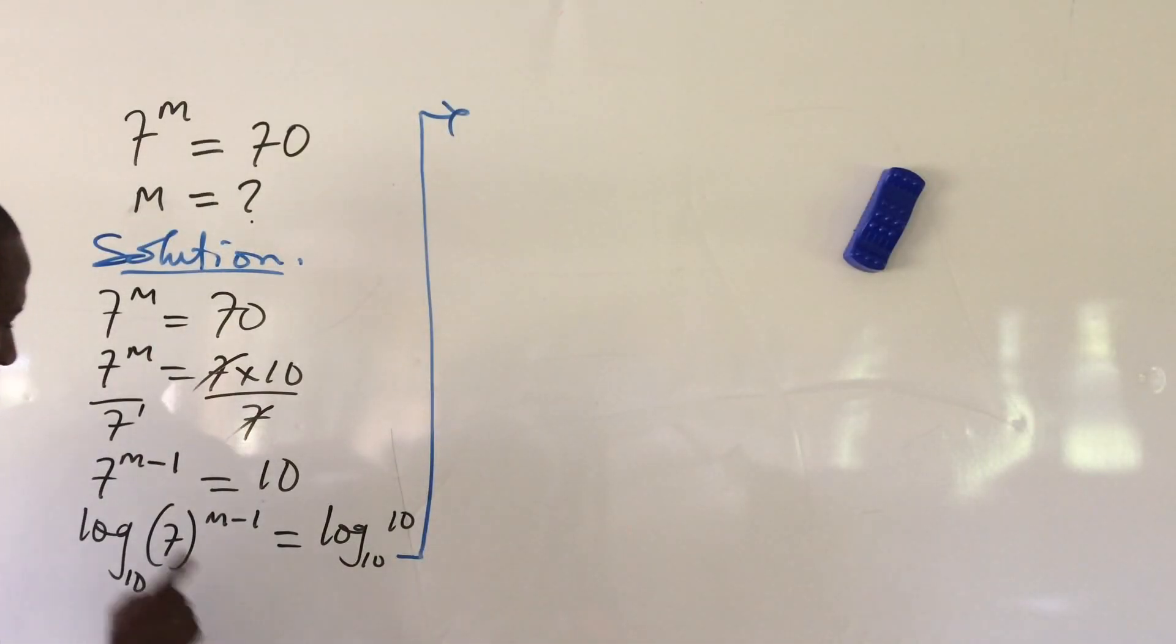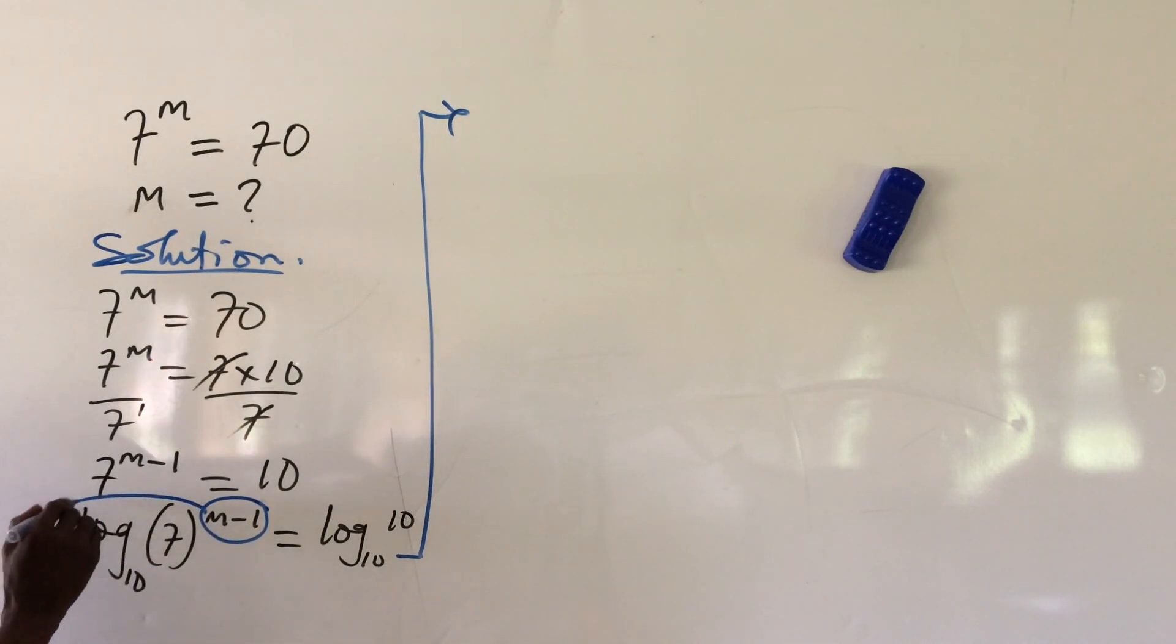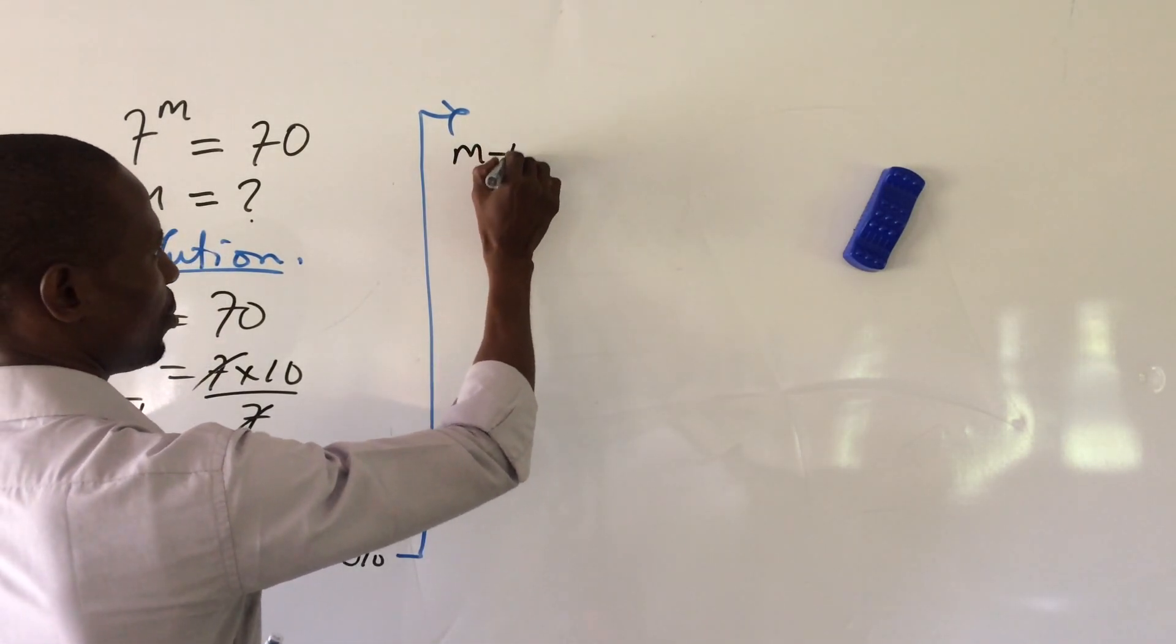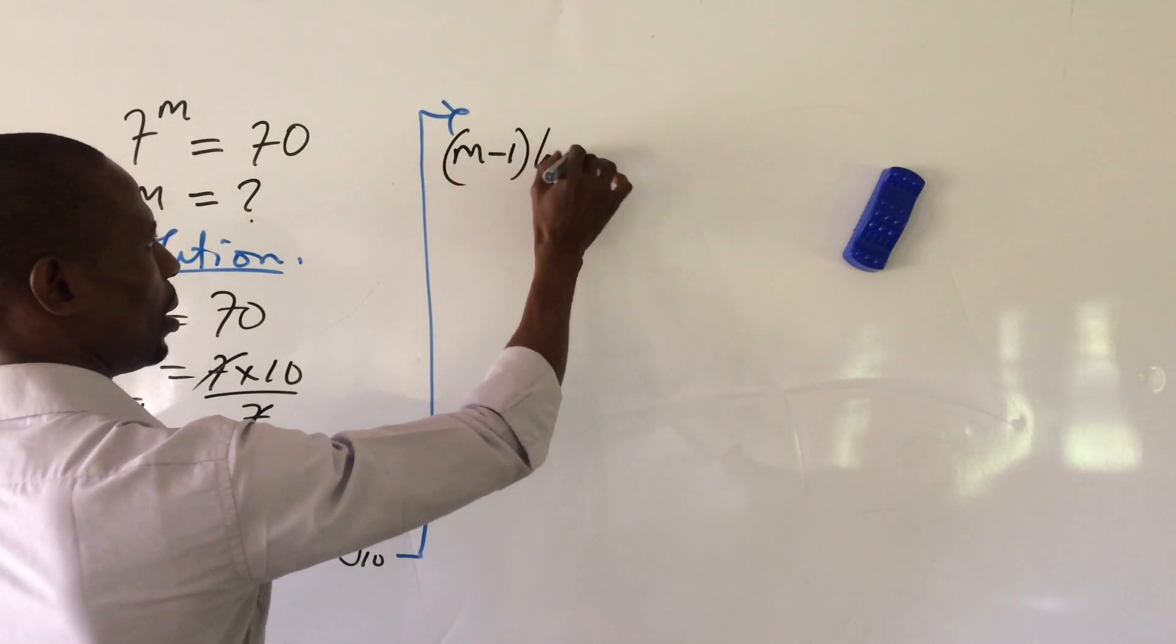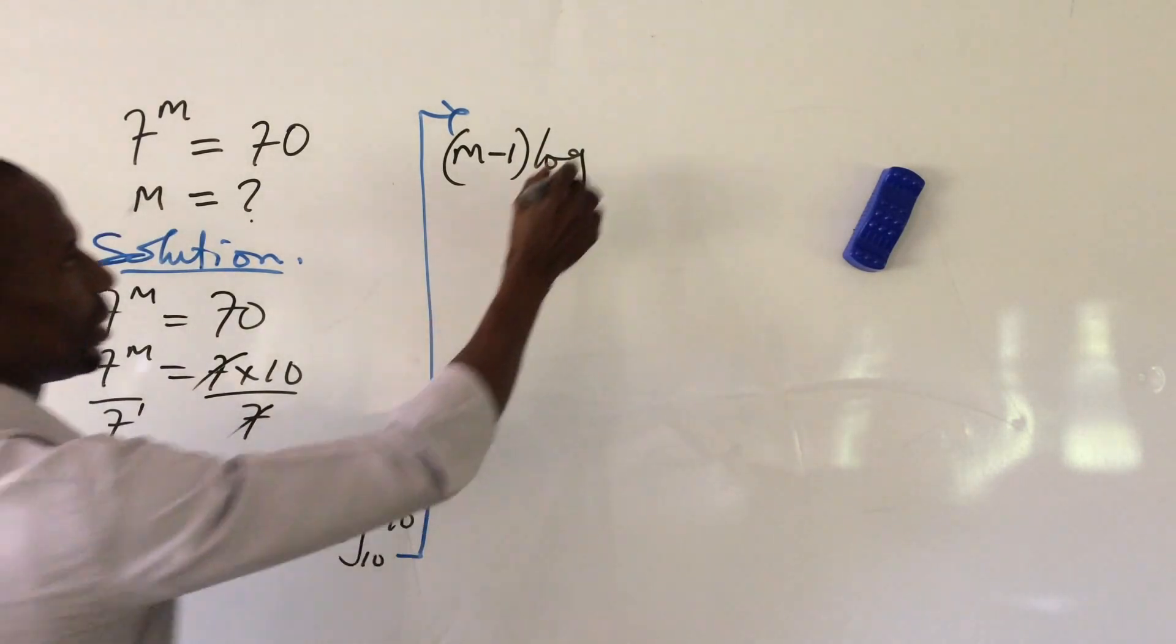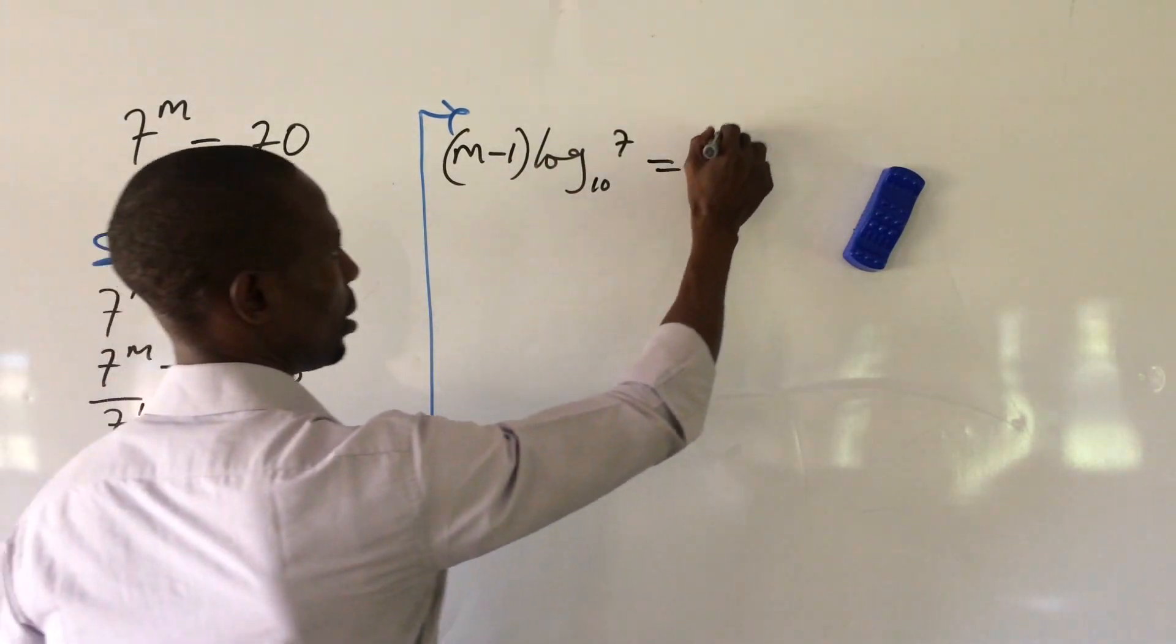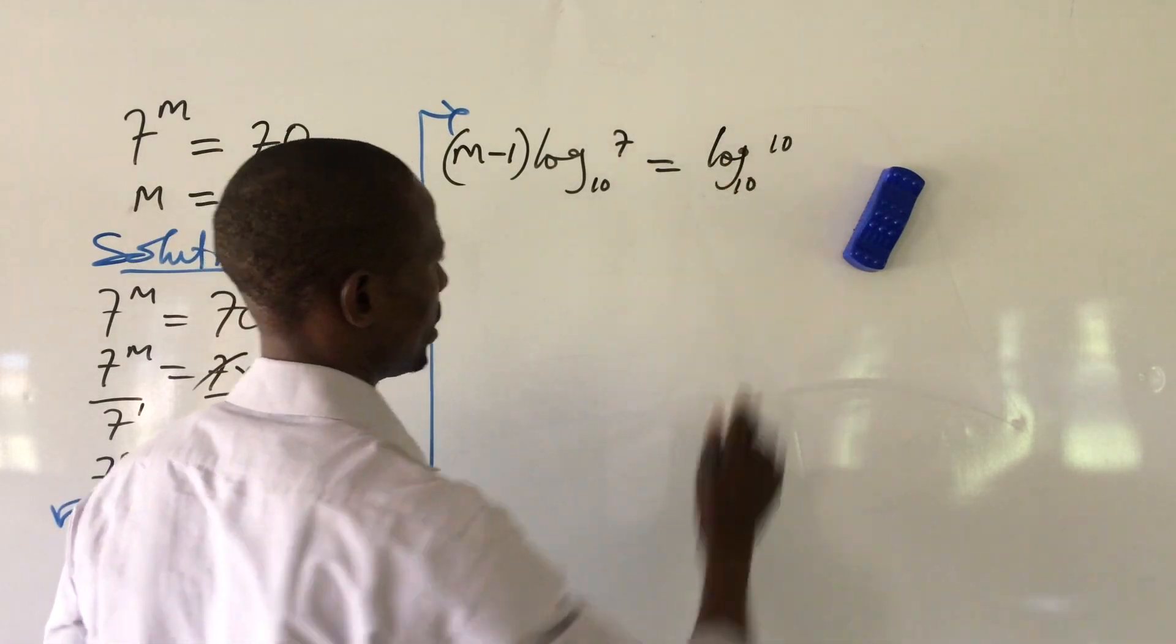So from here, we can apply the laws of logarithms by moving this power backward. If we do that, we're going to have this to be m minus 1 times log 7 base 10 equal to log 10 base 10.